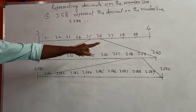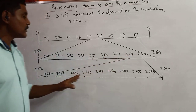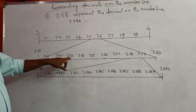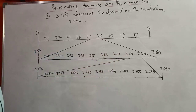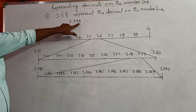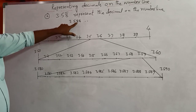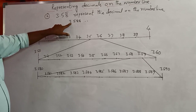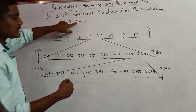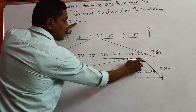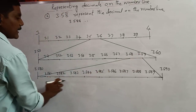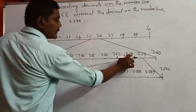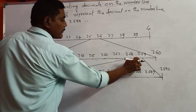So 3.52, 3.53, 3.54, 3.55, 3.56, 3.57, 3.58, 3.59, then 3.60. Now the third decimal digit is 8, so we divide 3.58 to 3.59. I divide this part again into 10 equal parts from 3.58 to 3.59.